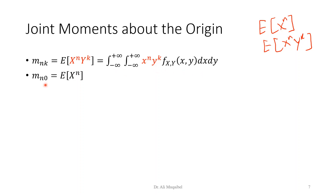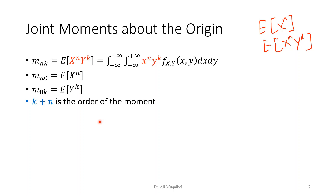We now have two subscripts for the moments. m_{n,0} is the expected value of x^n * y^0 — whenever the second subscript is zero, it is a marginalized moment. If you make the first subscript zero, x vanishes and we get the expected value of y^k. The order of the moment equals the sum of k and n. For a second-order moment, there are three possibilities: (2,0), (0,2), and (1,1) — all add up to two.